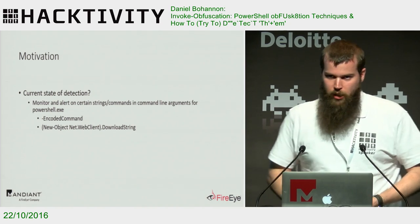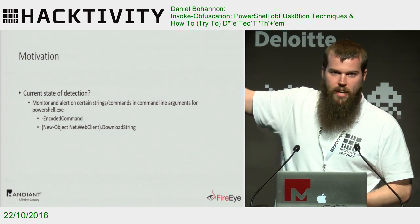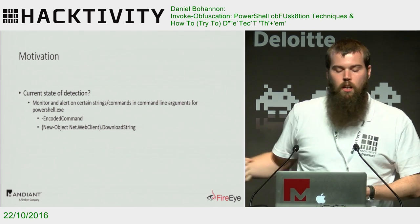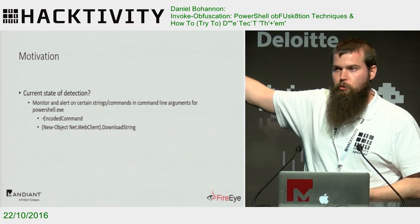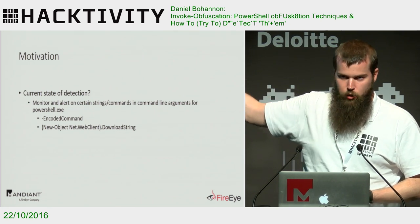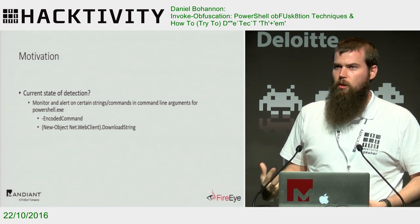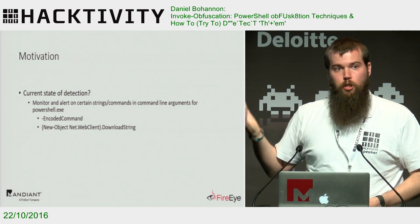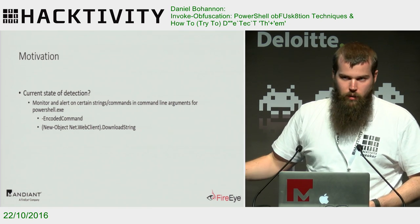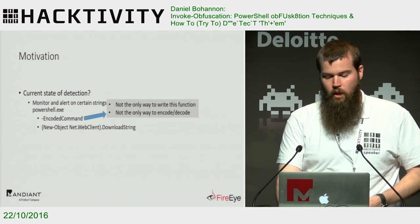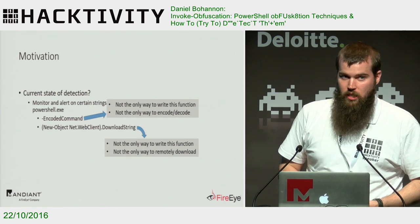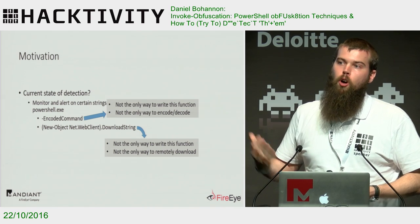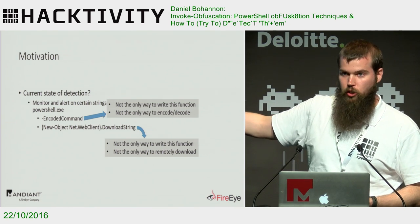The current state of detection: the two biggest things we see attackers using in PowerShell are encoded command — which is a base64 encoded command — and then 'New-Object Net.WebClient DownloadString', which is the most common remote download syntax, allowing you to download a script in memory and execute it in memory with no file hitting disk. However, for both of these, this is not the only way to write these functions, and it's also not the only way to perform the underlying functionality.